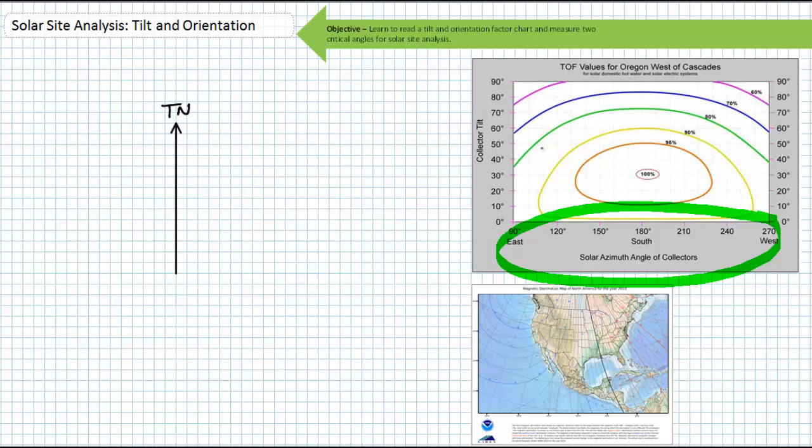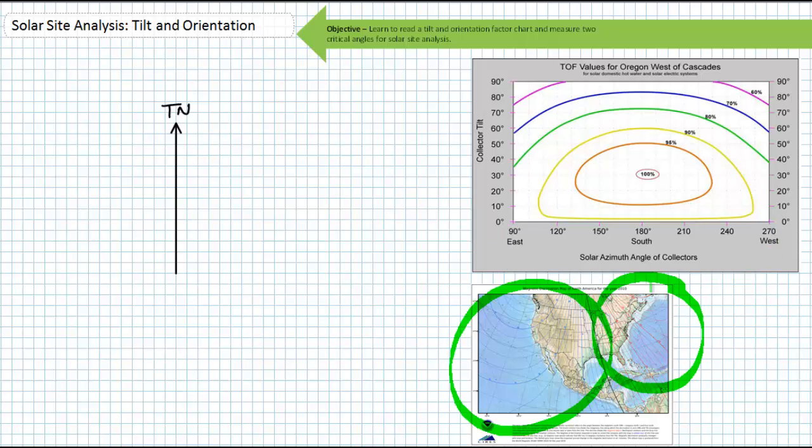Depending on your location, you might have an easterly or westerly offset of little or large magnitude or none at all. Regardless, the method I use works every single time and you cannot get it wrong if you take your time and do what I tell you to do.